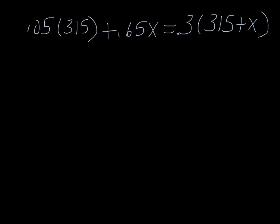Well, 0.05 times 315 can simply be multiplied together, and we'd get 15.75. Can't really do anything with the 0.65x at this point. And then on the right, you're going to distribute, and you'll get 94.5 plus 0.3x.